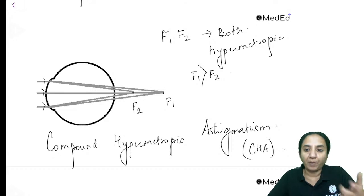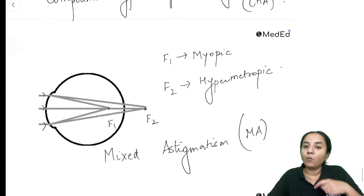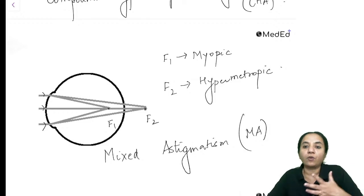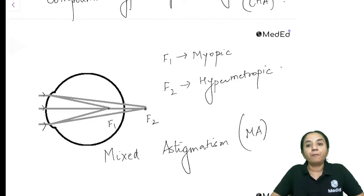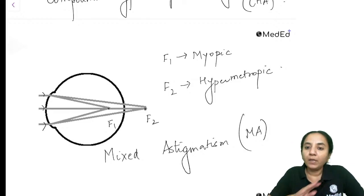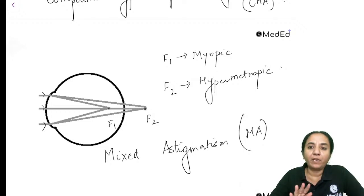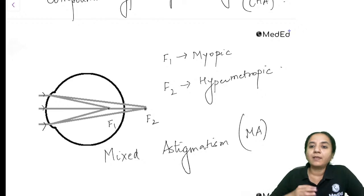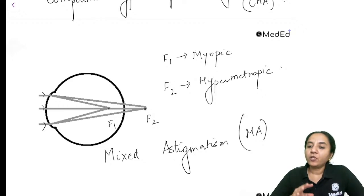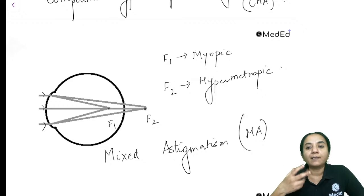To summarize the types of astigmatism: in Simple Myopic Astigmatism one axis is normal and one is myopic; in Simple Hypermetropic Astigmatism one axis is normal and one is hypermetropic; in Compound Myopic Astigmatism both axes are myopic but unequally so; in Compound Hypermetropic Astigmatism both axes are hypermetropic but unequally so; and in Mixed Astigmatism one axis is myopic and the other is hypermetropic. All these images have a high probability of being asked in the exam.